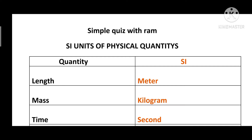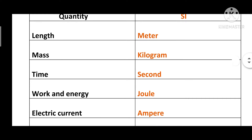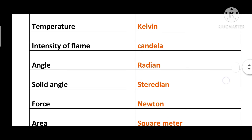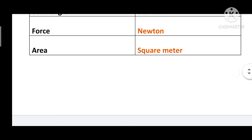Length: meter. Mass: kilogram. Time: second. Work and Energy: joule. Electric Current: ampere. Temperature: kelvin. Intensity of luminous flame: candela. Angle: radian. Solid Angle: steradian. Force: newton. Area: square meter.